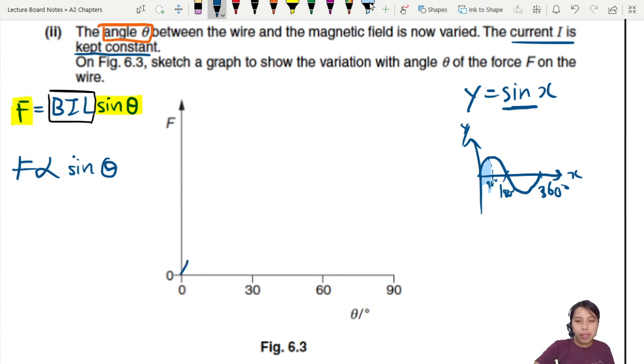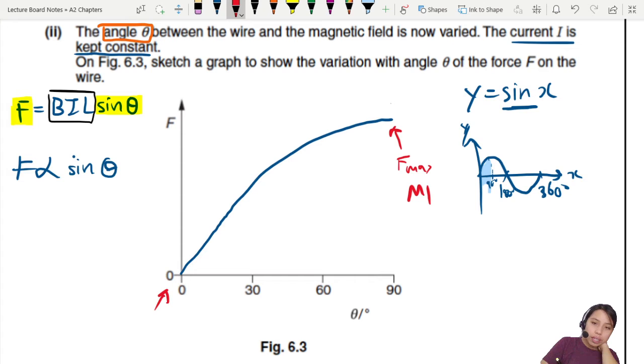So you can try to draw that. The mark scheme is quite interesting, there's three marks here. First mark is if your maximum force is when it is 90 degrees. F max at 90 degrees. Second one, zero force at 0 degrees. The last one, reasonable curve with the force about halfway maximum at 30 degrees. So halfway should be about 30. Three marks for this. I draw two graphs, I get five marks.